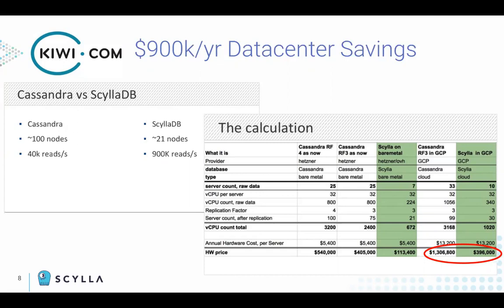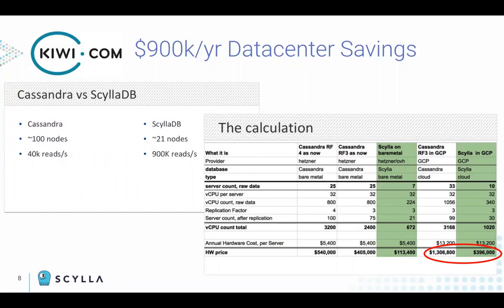Look at the number of servers reduction. In the Comcast case, you might say it was easy to reduce from a thousand servers — there might be enough fat in there. But here with Kiwi, we can see that even deployments that might be considered efficient with Cassandra can be optimized, and the savings are significant. The money savings go directly to the bottom line. Think about the maintenance cycles and the probability of failure — the larger the system is, the shorter the mean time to failure, requiring more staff to maintain the working system.